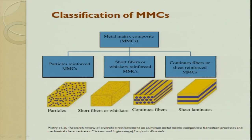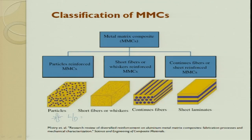Metal matrix composites can be classified into: particulate reinforced MMC — very small particles with aspect ratio (L/D) of 1, 2, 3, less than 5 — dispersed inside the matrix. The next form is short fibers: slightly higher aspect ratio, whiskers or short fibers of glass or ceramic dispersed inside a metal matrix to form a composite.